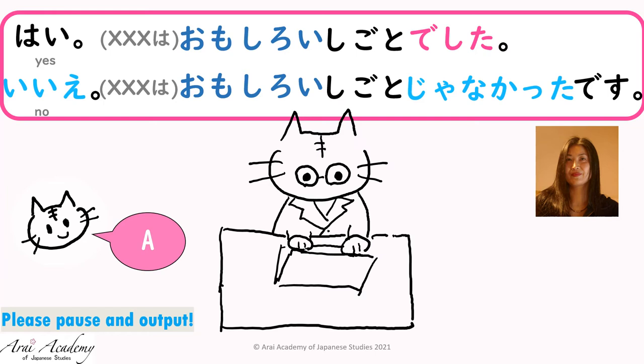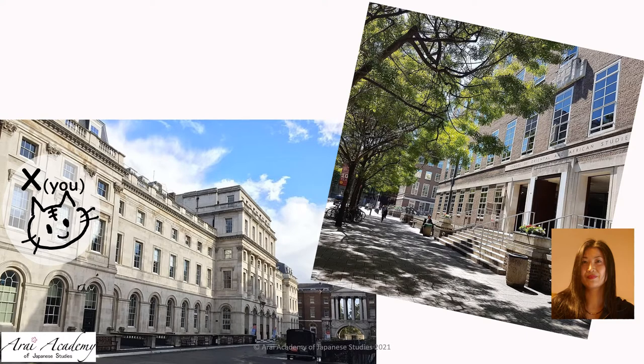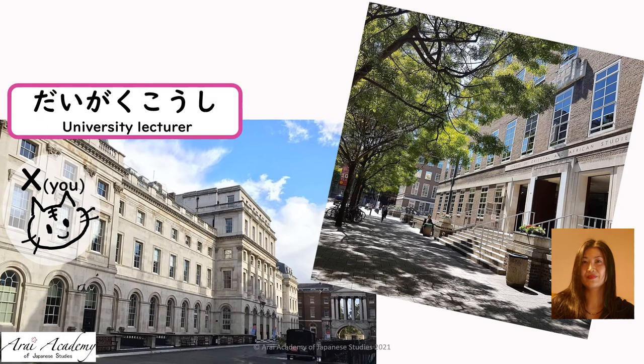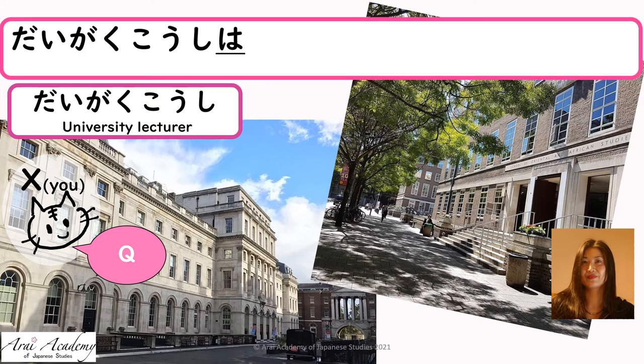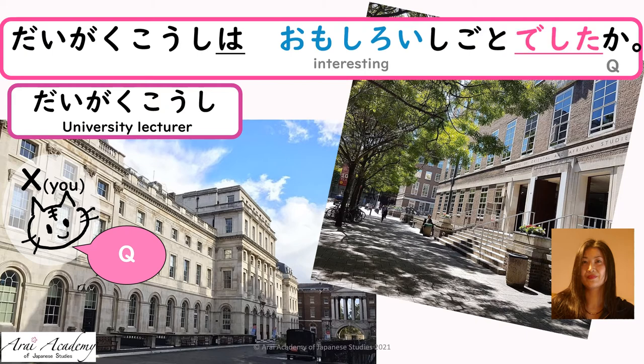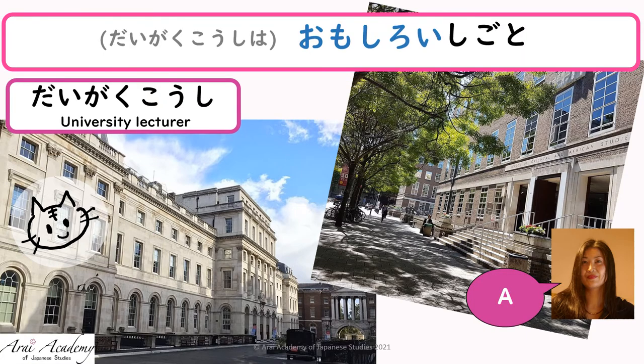Repeat after me: ja nakatta desu. Ja nakatta desu. Good! Now your turn. My previous job was daigaku koushi — ask me. Yes: Daigaku koushi wa omoshiroi shigoto deshita ka? Hai, omoshiroi shigoto deshita.